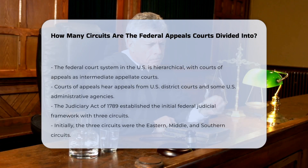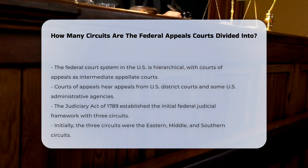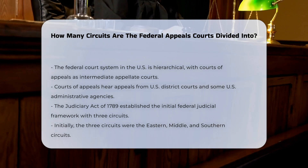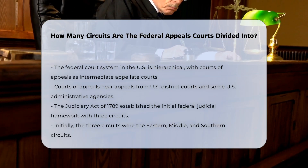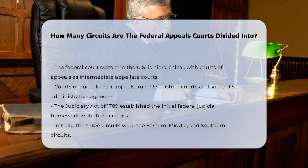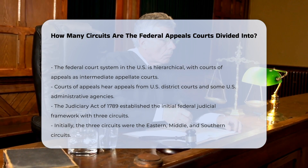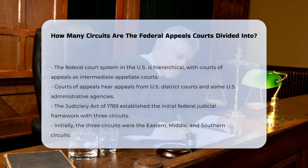The federal court system in the United States is structured in a hierarchical manner, with the courts of appeals playing a crucial role as the intermediate appellate courts. These courts are responsible for hearing appeals from the U.S. District Courts and some U.S. Administrative Agencies.